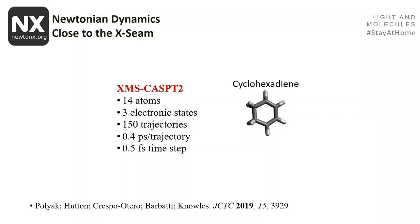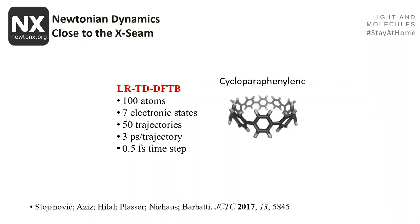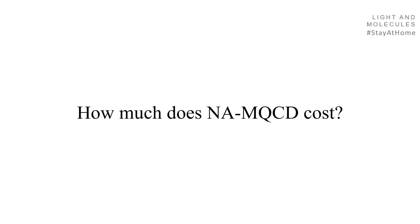What can you do in terms of dynamics? At one extreme, you can study a small molecule like cyclohexadiene — 14 atoms, 3 electronic states, 100 trajectories, half a picosecond per trajectory — at a very high level such as XMS-CASPT2. At the other extreme, you can study a large molecule like cycloparaphenylene — 100 atoms, 7 electronic states, 3 picoseconds per trajectory — but you must use a lower-level method such as linear-response time-dependent DFTB. The next question is: how much does nonadiabatic mixed quantum-classical dynamics cost? That will be answered in the next part.